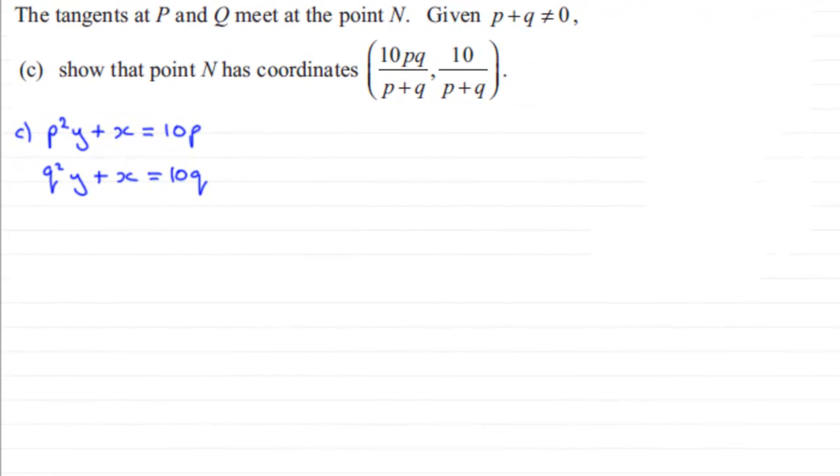Hi. Now in this next part, we've just got the tangents at P and Q meet at the point N, and we're given that P plus Q doesn't equal zero. We've got to show that the point N has coordinates 10PQ over P plus Q and 10 over P plus Q. We've got our tangents here from the previous part, so it's just a question of solving these simultaneously to find that point of intersection.